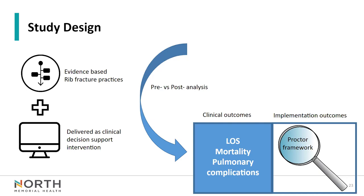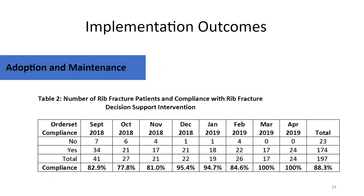We did a before-and-after analysis and looked at clinical and implementation outcomes. When we first rolled this out, we had 80% adherence with the intervention — which is really good, the highest I've ever had in the first month. After about seven months, we reached 100% adherence with this decision support intervention.